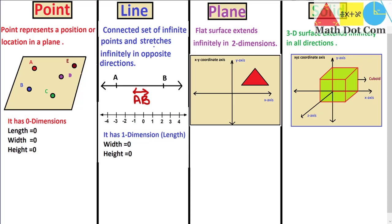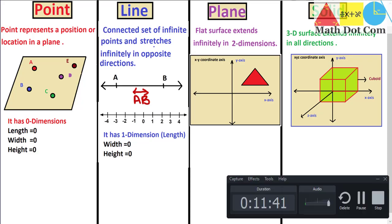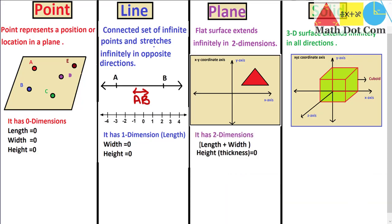Then we have the plane. A plane has two dimensions: length and width, but its height or thickness is equal to zero. It is a flat surface, just like the top of your screen, the top of your table, or the top of your paper — it is just like a flat shape with zero thickness. Then we have the solids. Solids are three-dimensional objects, so they have three dimensions: height, width, and length.